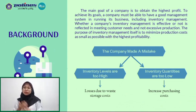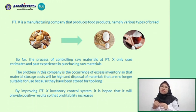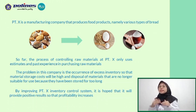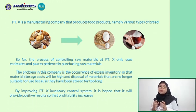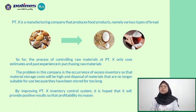The purpose of inventory management itself is to minimize production costs as small as possible with the highest profitability. If a company makes a mistake in managing the size of raw materials, there will be losses due to excess inventory, resulting in high storage costs. But if inventory is too low, it can also increase costs due to repeated processing costs. Ex Company is a manufacturing company that produces food products, namely fruit-based snacks, made from ingredients such as flour, eggs, sugar, and other supporting ingredients. The company only uses past experience in processing raw materials, leading to excess inventory, high storage costs, and disposal of materials no longer suitable for use.